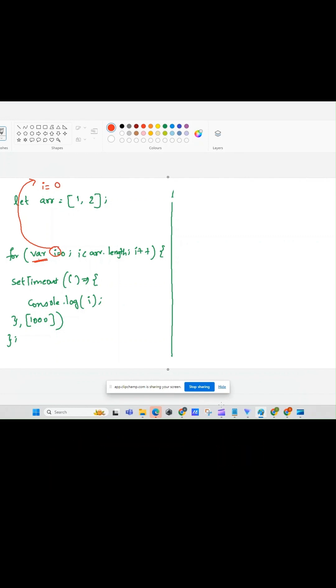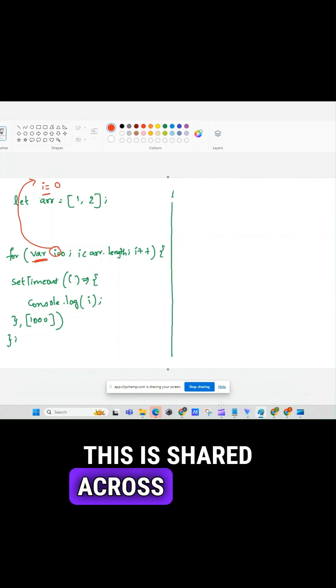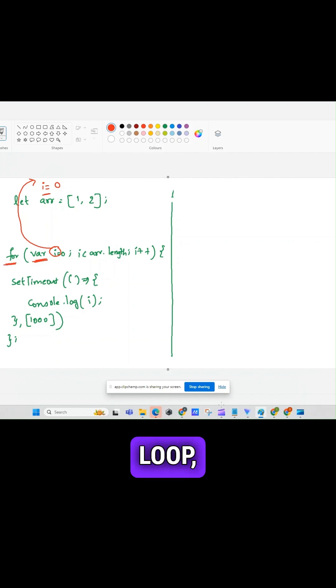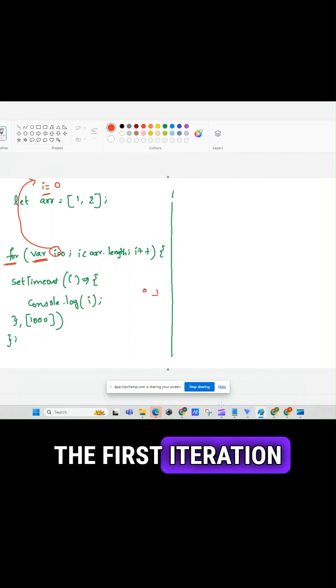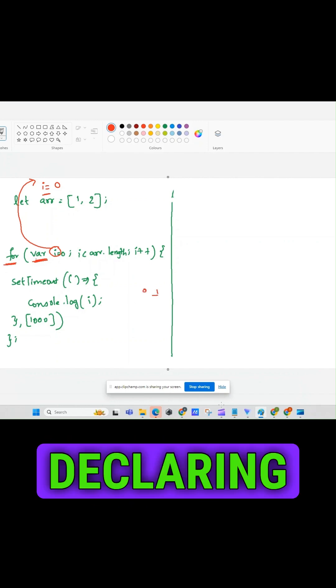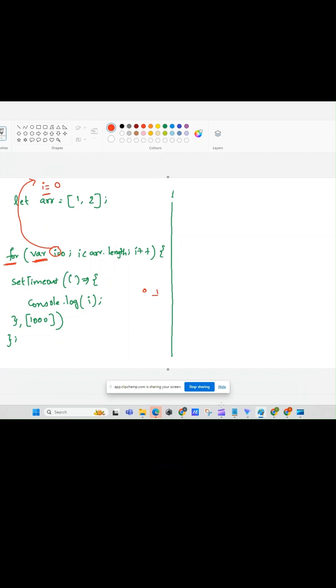As this variable is declared by using var keyword, this is shared across all the iterations of this for loop, means 0th iteration and the first iteration of this for loop. If we are declaring by using let keyword, it will not be shared across all the iterations. As we are declaring by using var keyword, it will be shared across all the iterations of this for loop.